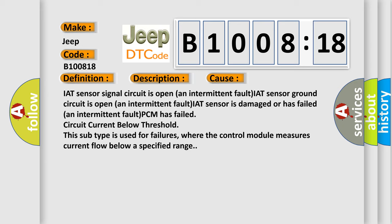IAT sensor is damaged or has failed in intermittent fault, PCM has failed circuit current below threshold. This subtype is used for failures where the control module measures current flow below a specified range.